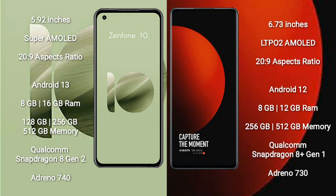Xiaomi 12s Ultra runs on the Android 12 operating system. Asus Zenfone 10 comes with 8GB or 16GB RAM and 128GB, 256GB, or 512GB internal storage, powered by a Qualcomm Snapdragon 8 Gen 2 processor and GPU Adreno 740.